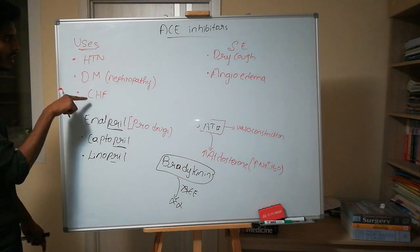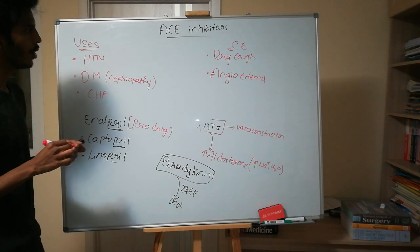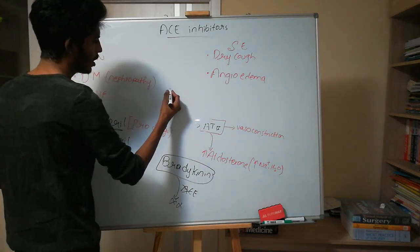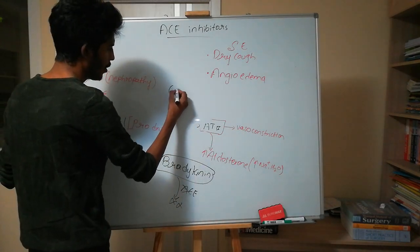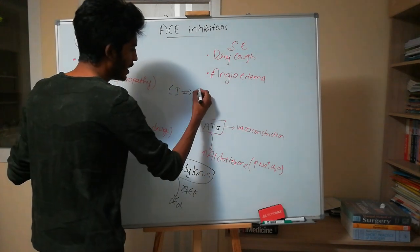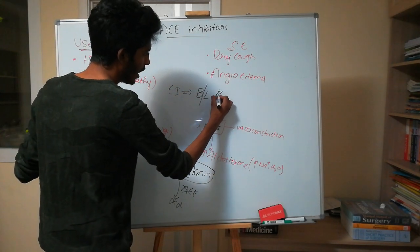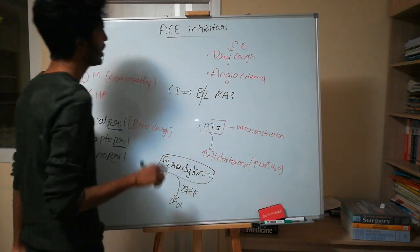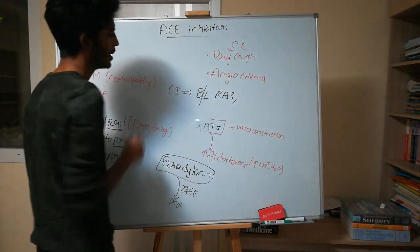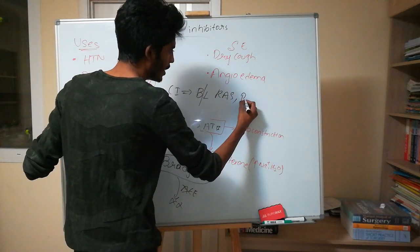One important contraindication for ACE inhibitors is bilateral renal artery stenosis. Apart from that, ACE inhibitors are also not used in pregnant women.